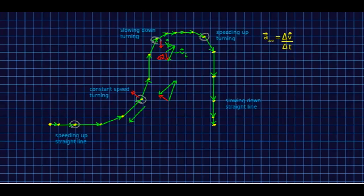So you can probably guess then what's going to happen over here, where it's speeding up and turning. But let's see it. So I'm going to copy my vf, which is about like this. And I'm going to copy my negative vi, which is going to point this way.